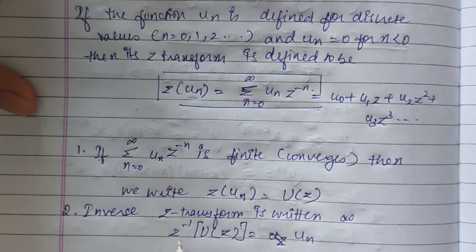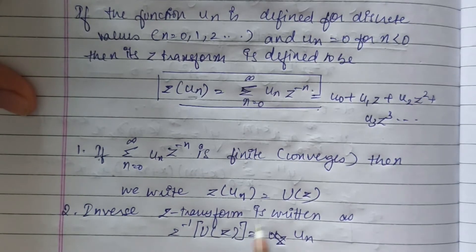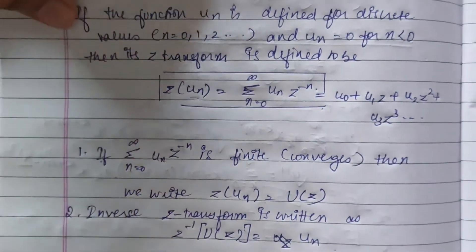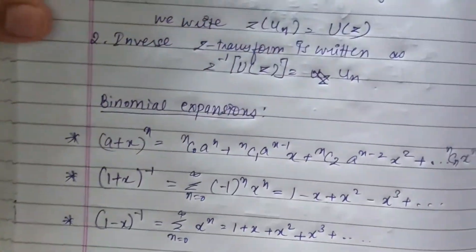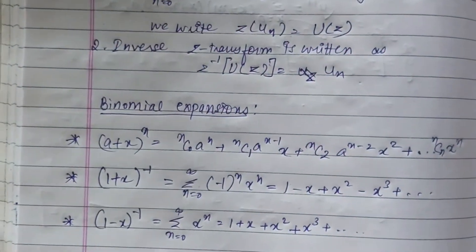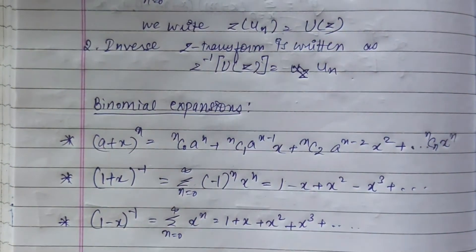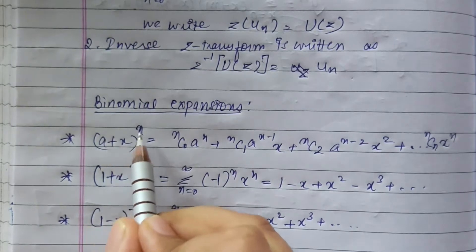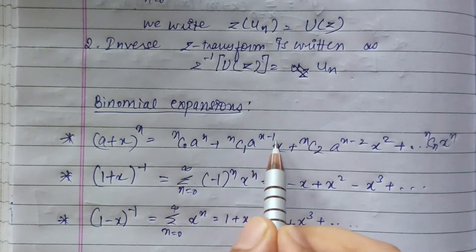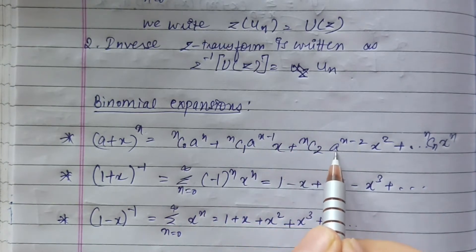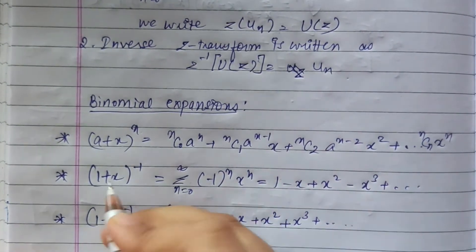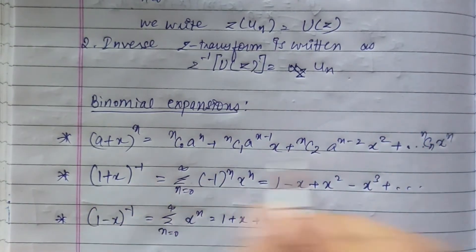The inverse Z transform is written as Z^(-1){U(z)} = u(n). That's not critically important, just good to know. There are a few binomial expansions that we will be using significantly throughout, including ones you would have used in your 12th grade. So (a + x)^n = nC0 * a^n + nC1 * a^(n-1) * x + nC2 * a^(n-2) * x^2 and so on up to nCn * x^n, where a^0 equals 1.